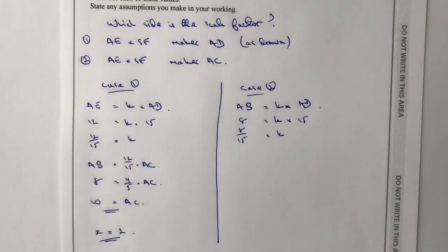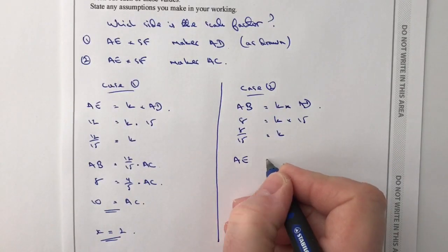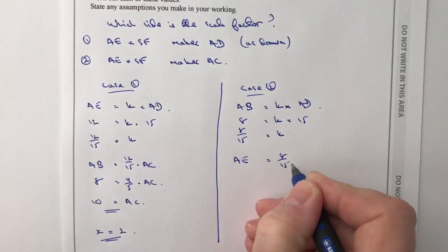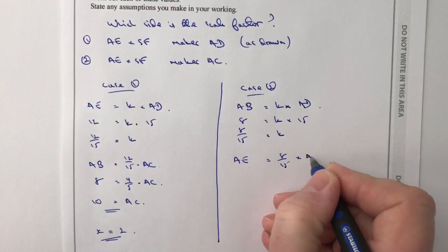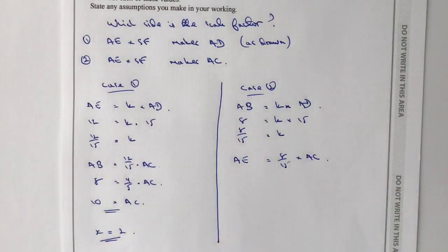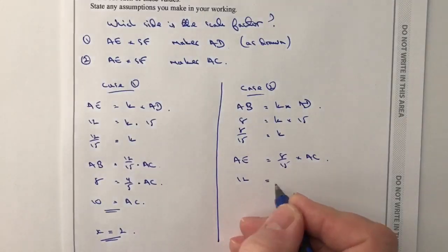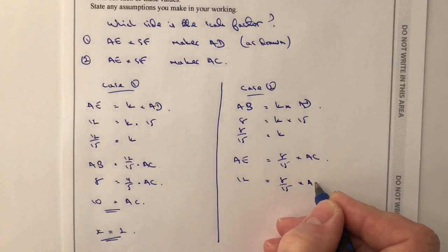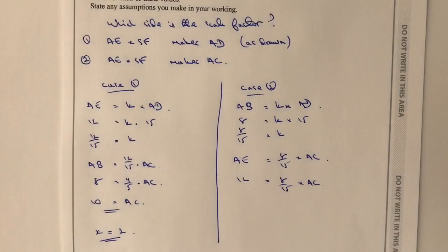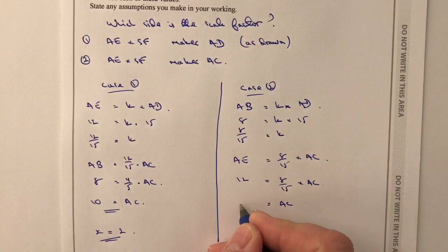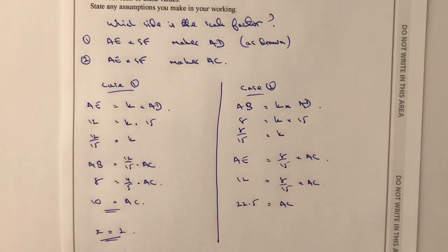So therefore, we can now work out AE. So AE is going to equal to 8 fifteenths of AC, sorry, AE when we flip it over onto the new triangle, and then we've got AE is going to be 12, which is equal to 8, 15 times AC, and again, you need to calculate that through for yourself, but we're going to say then that AC equals 22.5.